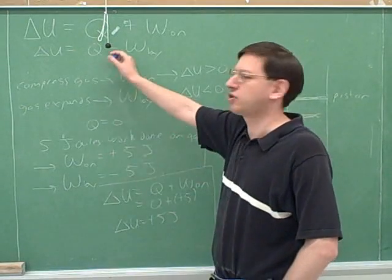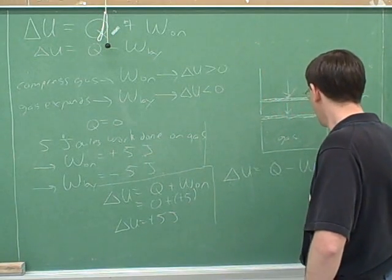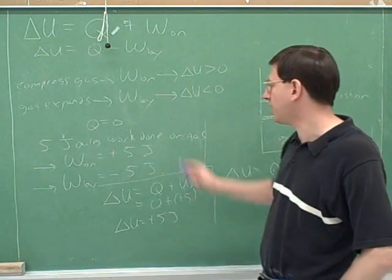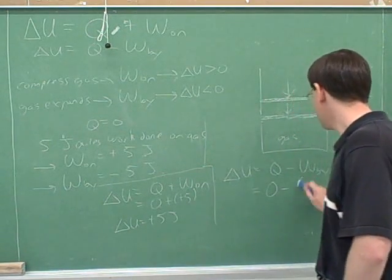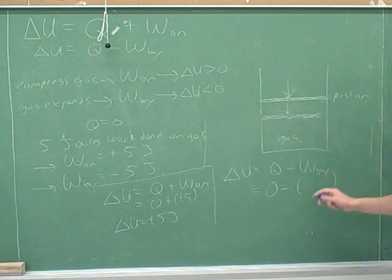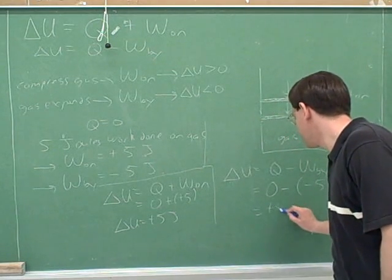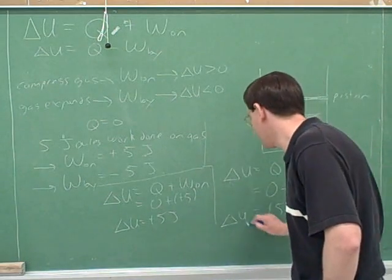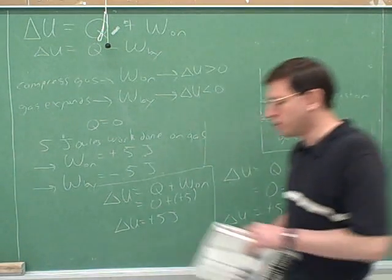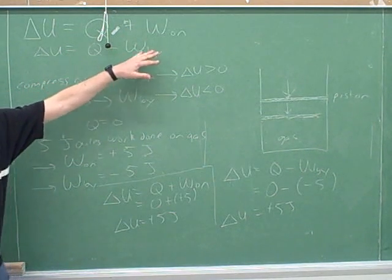A physicist would also enjoy using this equation even though it doesn't seem appropriate. Even though work is being done on the gas, we can still use the work-by-the-gas equation if we're careful with the signs. Q is still 0, and now we subtract. Notice it still comes out to be positive 5, because we have two negatives — we're subtracting a negative number — and we get the same answer: delta U is positive 5. So even when work is being done on the gas, you can still use this equation; you just have to plug in a negative number.